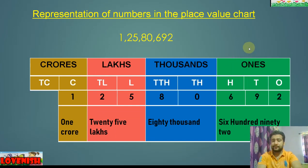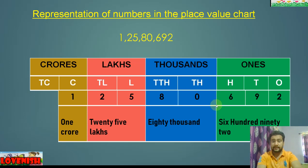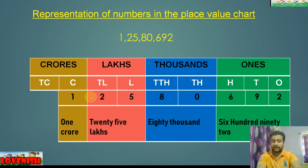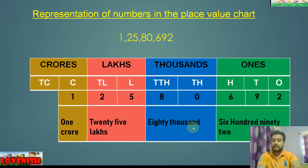There is a group of ones, a group of thousands, a group of lakhs, and a group of crores. In the ones group there are ones, tens, and hundreds — that is why we put a comma after three digits. So the number reads: one crore twenty-five lakhs eighty thousand six hundred ninety-two.